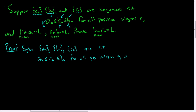We also have to assume that the limit as n approaches infinity of a_n is equal to l, so a_n converges to l. And we also want b_n converges to l. So we've written down all our hypotheses.